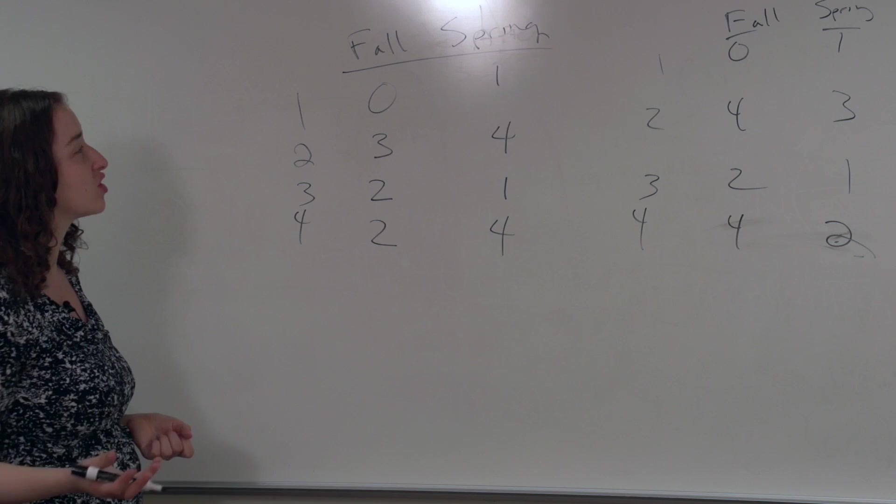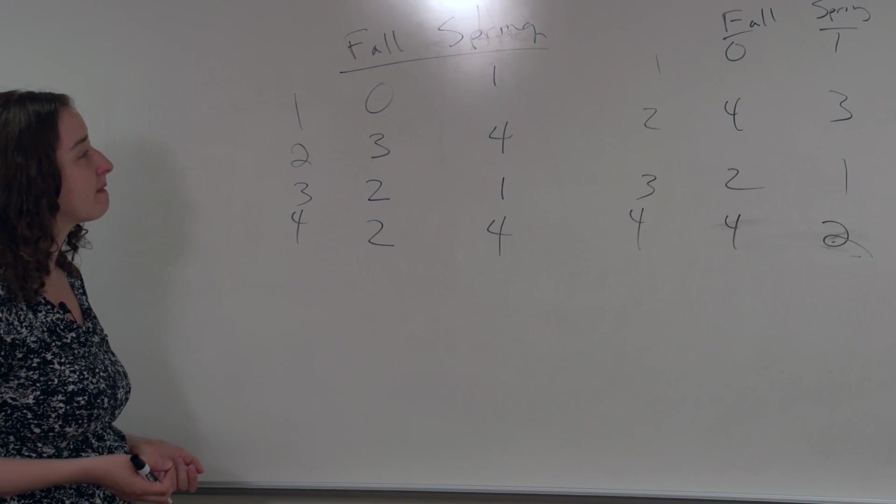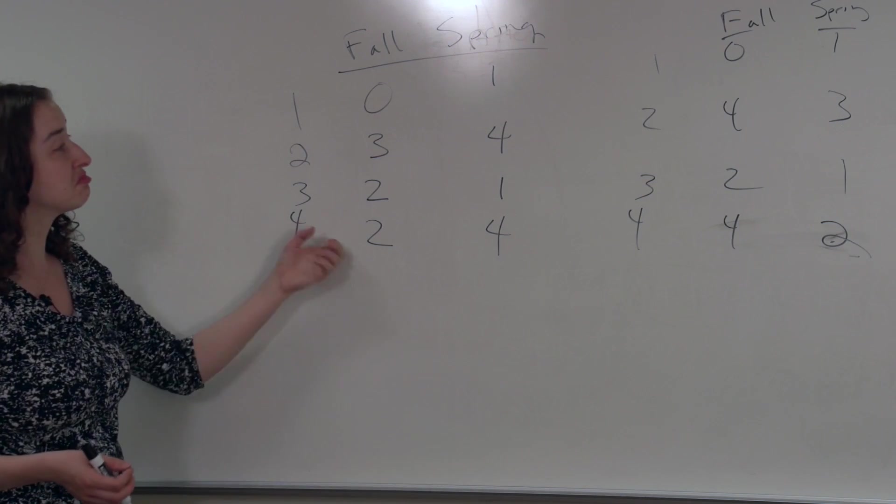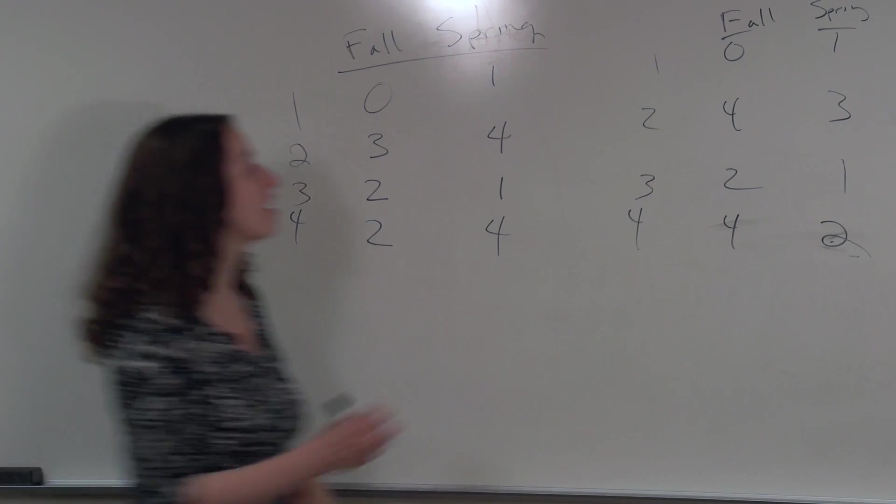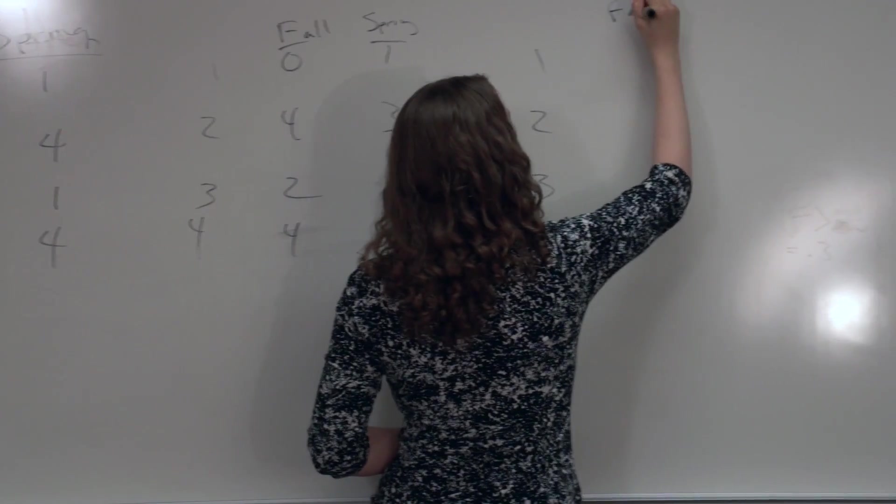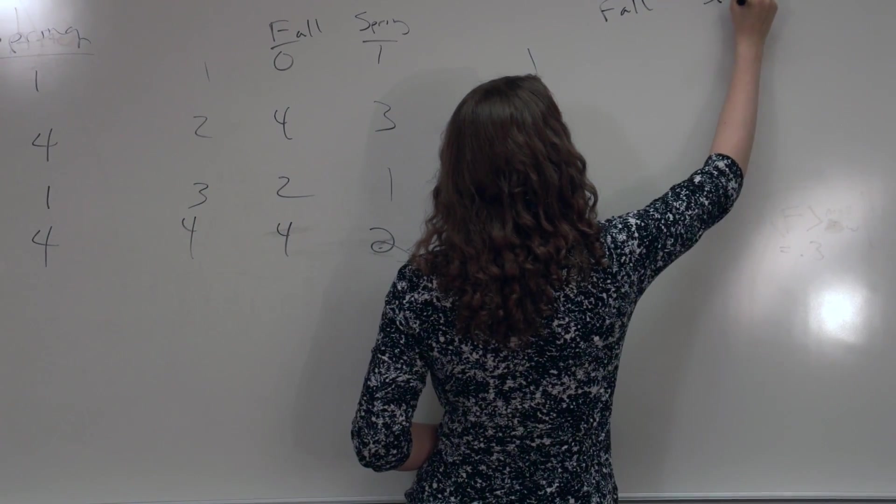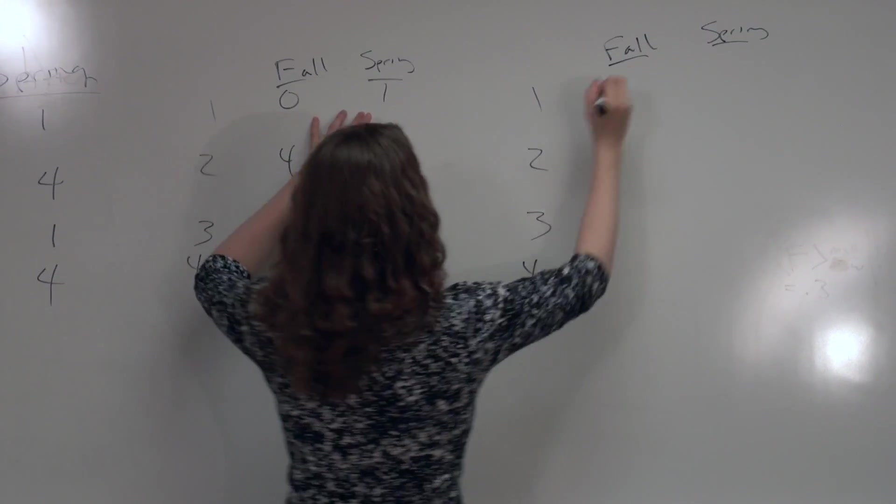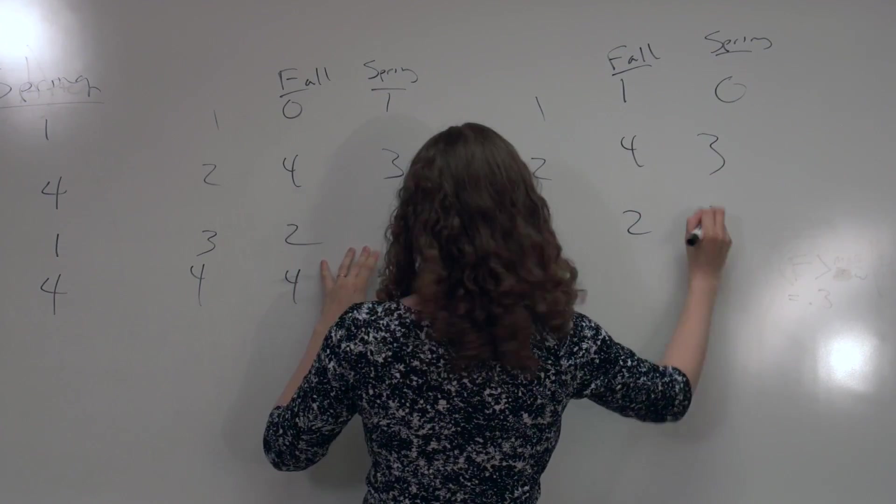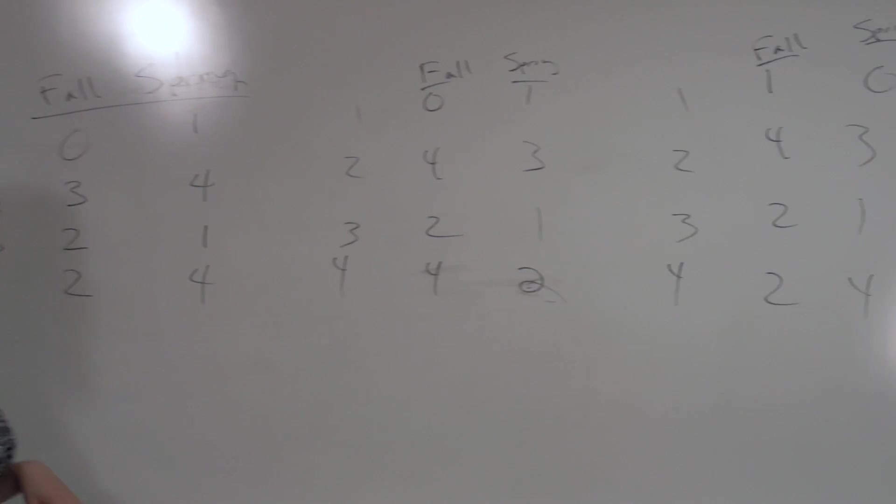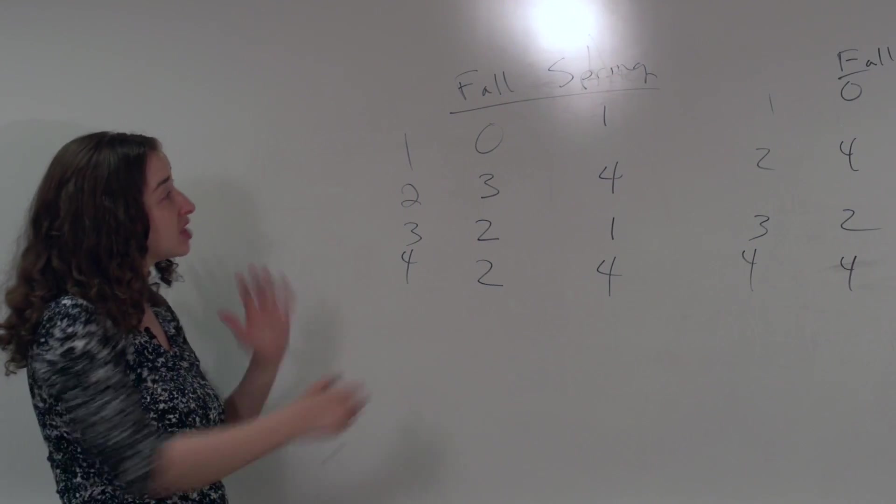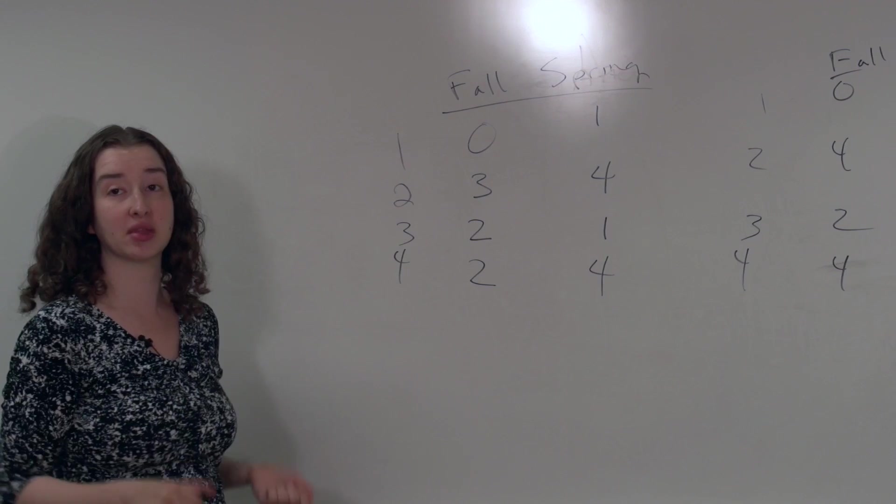These two data sets would be equally likely if we're assuming that fall and spring A's are equally likely. If we're assuming the average grades are the same for these students in the fall and the spring, then this data set where I flipped a couple of these rows is equally likely to this data set. And another possibility would look like this. Maybe this time I'll flip this one, maybe this time I'll leave that like that.